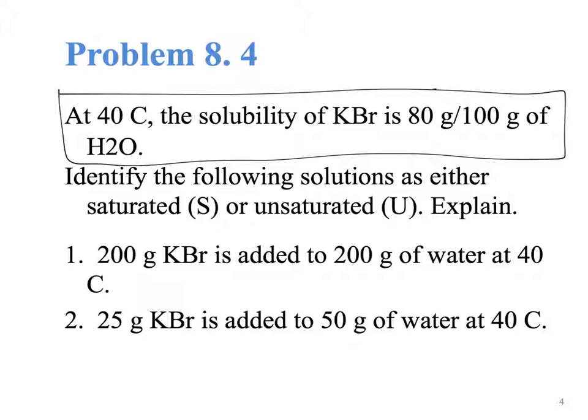So, let's say that we have the following statement. We can dissolve 80 grams of potassium bromide in 100 grams of water at 40 Celsius. Let's identify these solutions as saturated or unsaturated. Let's say that we have 200 grams of potassium bromide in 200 grams of water.